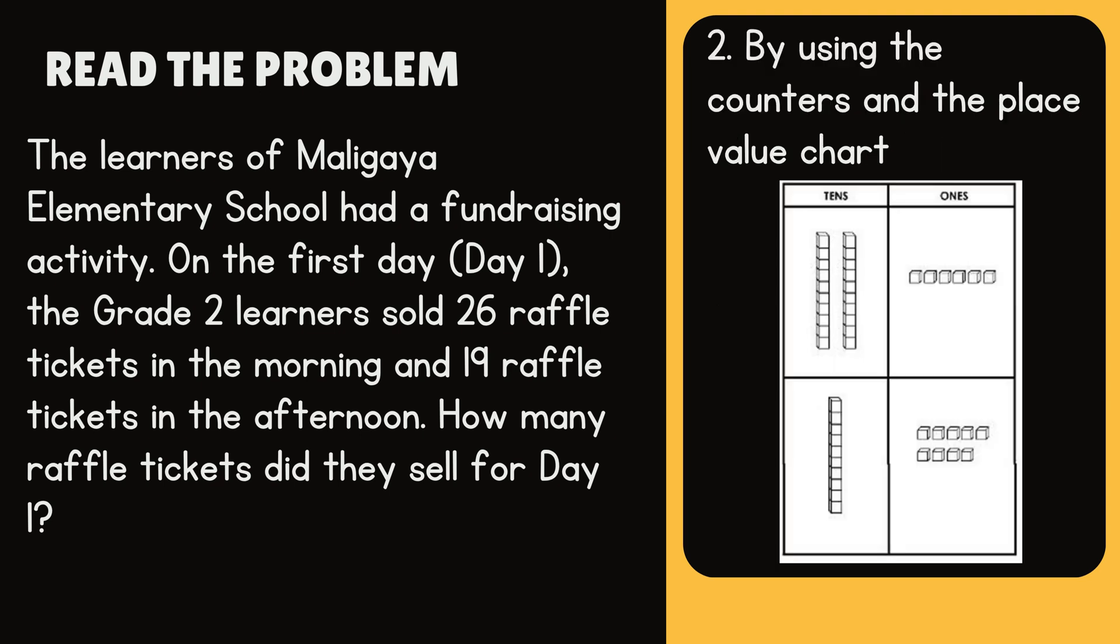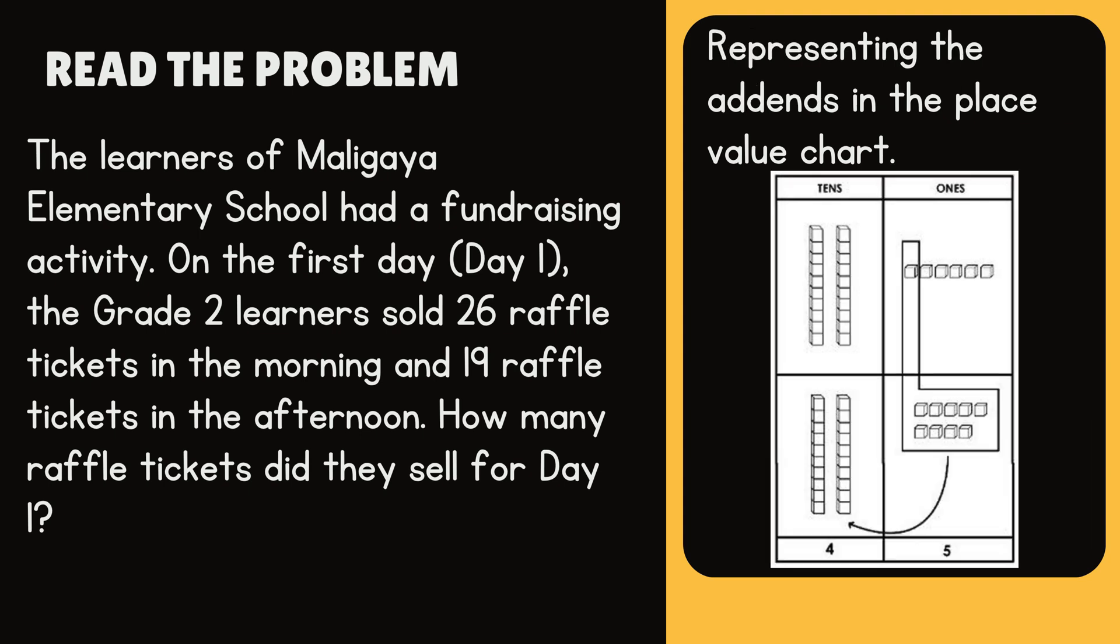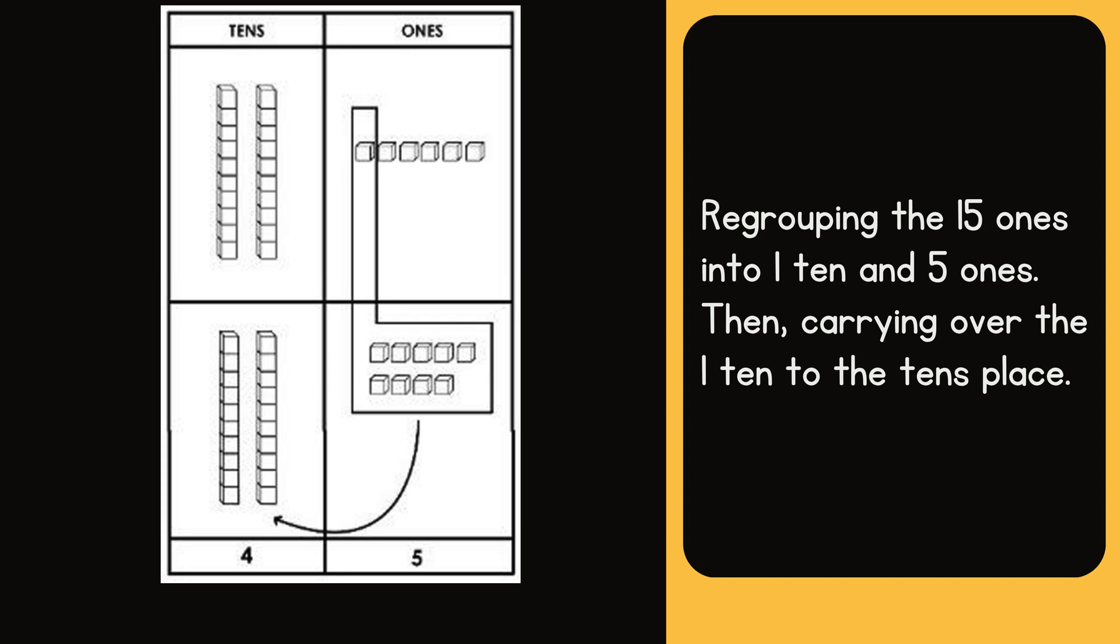We can also add numbers by using the counters and the place value chart. This can represent the addends in the place value chart. Regrouping the 15 ones into 1 ten and 5 ones, then carrying over the 1 ten to the tens place.